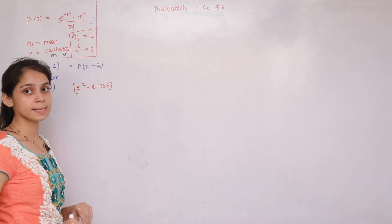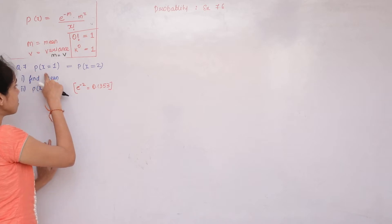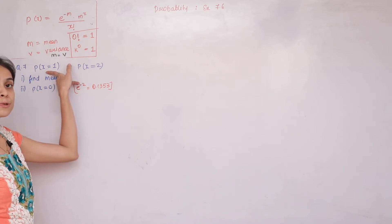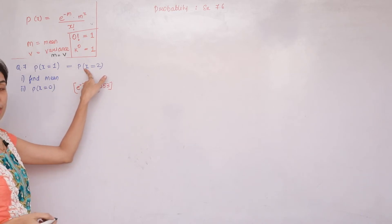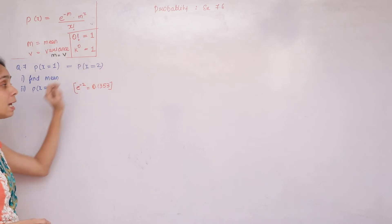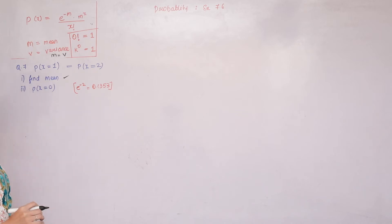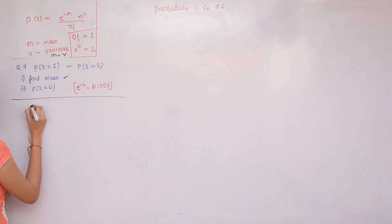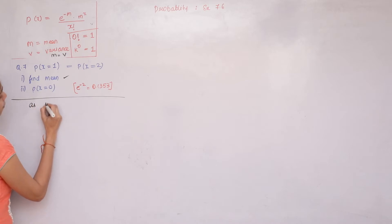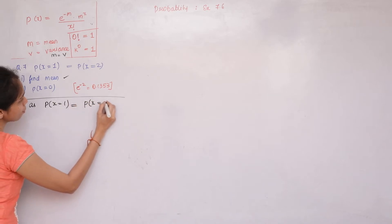Next, question number 7. In question 7, using Poisson distribution, a condition is given: P(X=1) = P(X=2). Based on this, we must find the mean m, and then find P(X=0).